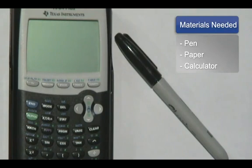Now the materials that you'll need for this particular exercise is a pen, piece of paper, and a calculator whether it be scientific or graphing. Now in our example we're going to use a graphing calculator but it works just as well with the scientific one.